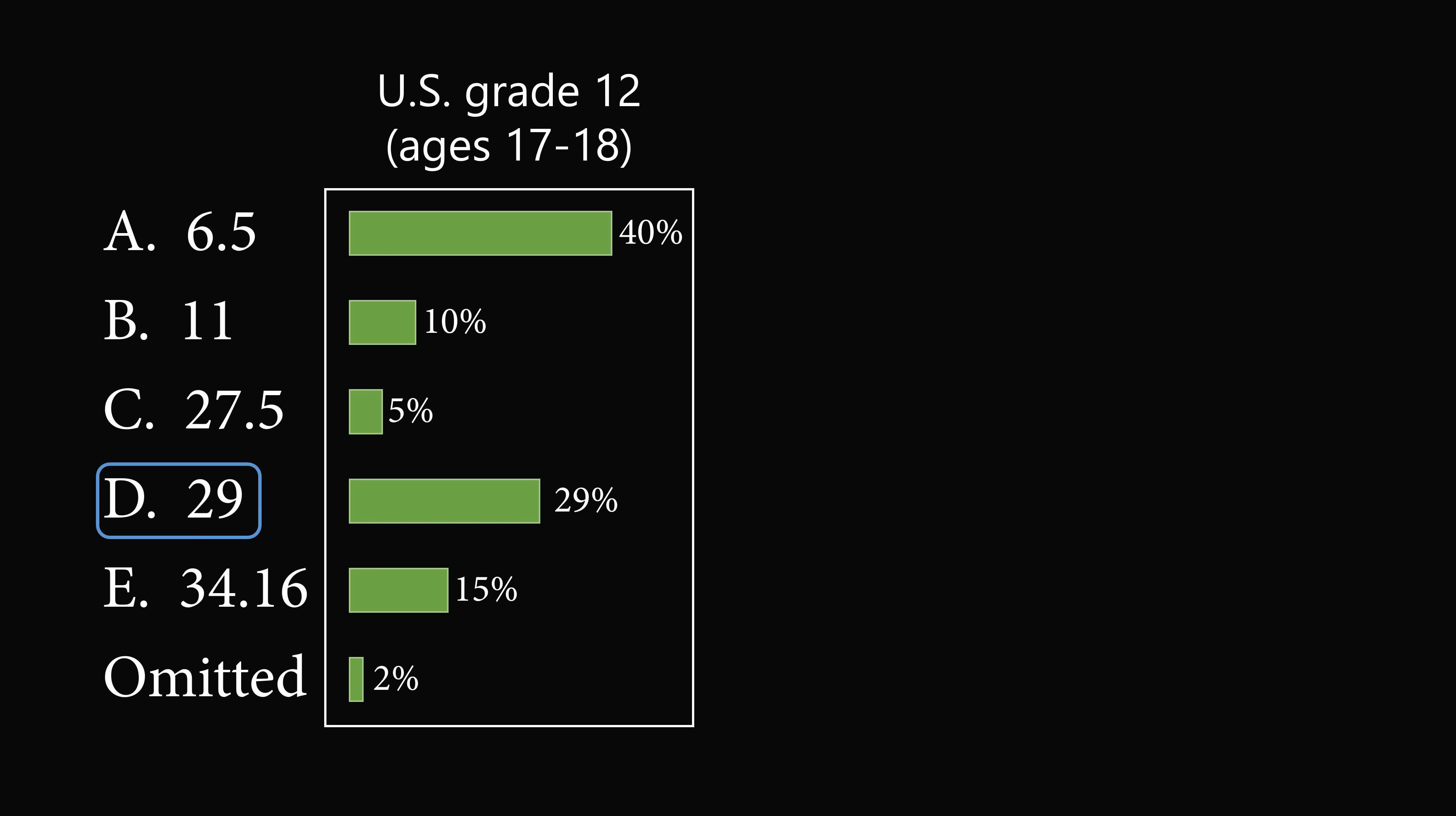After that, it was the answer of 11 with 10%, and the answer of 27.5 at 5%. A small percentage of students, 2%, omitted the question altogether.